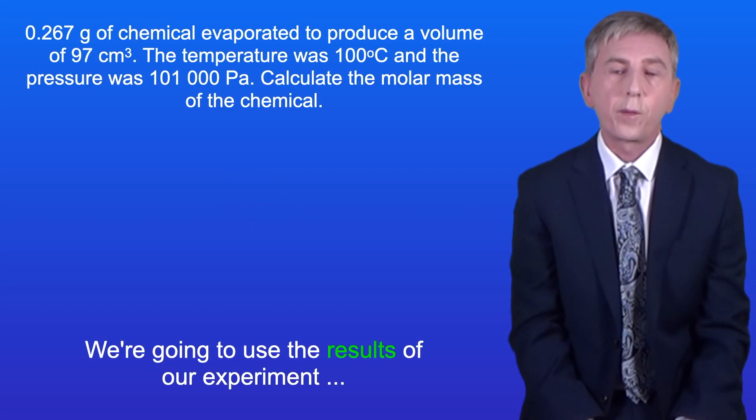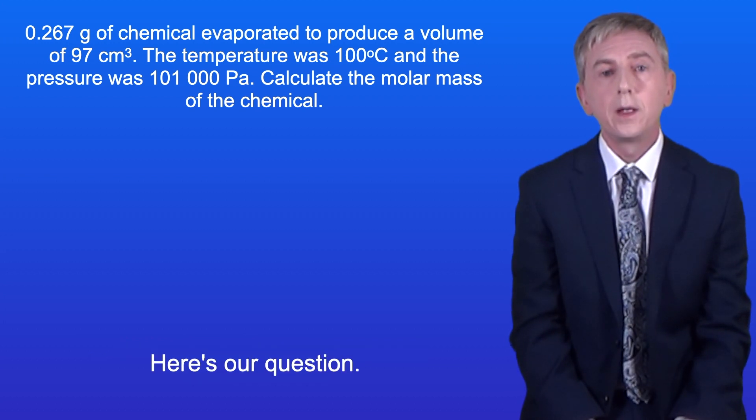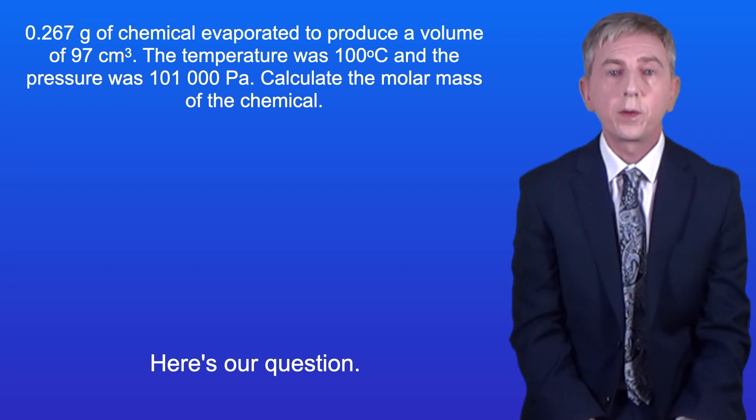We're going to use the results of our experiment to work out the molar mass of our chemical. Here's our question. 0.267 grams of chemical evaporated to produce a volume of 97 centimeters cubed. The temperature was 100 degrees celsius and the pressure was 101,000 pascals. Calculate the molar mass of the chemical.